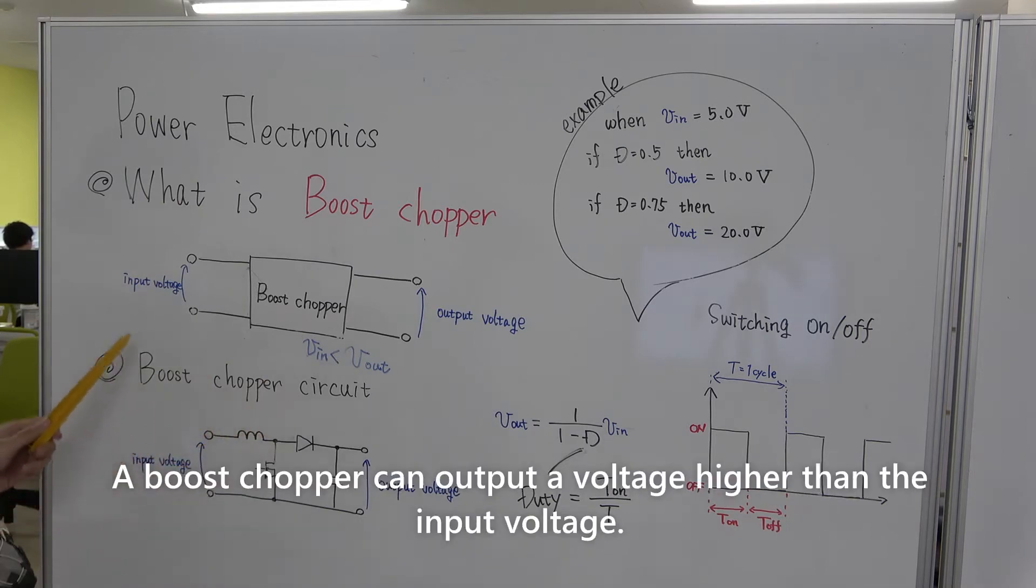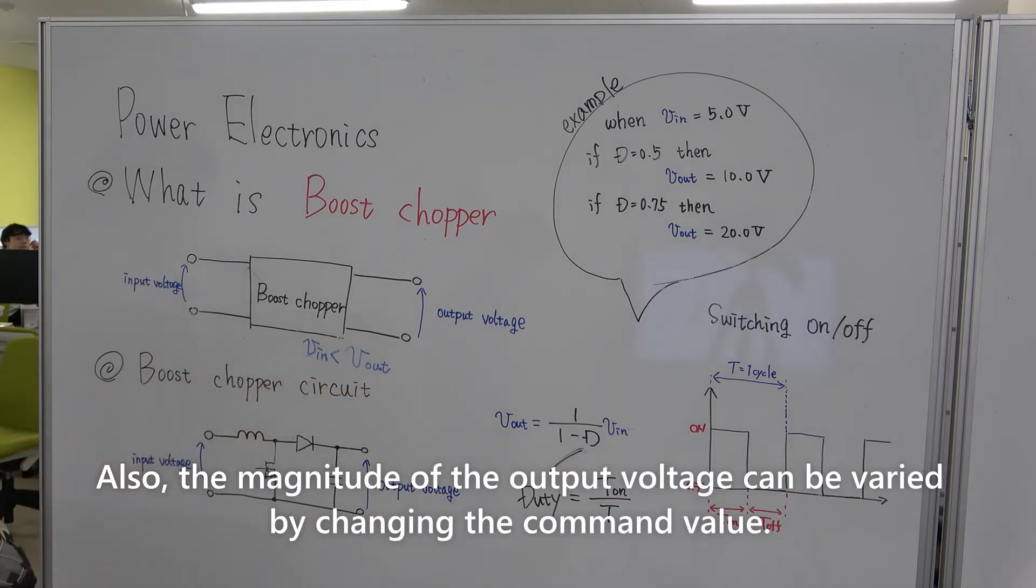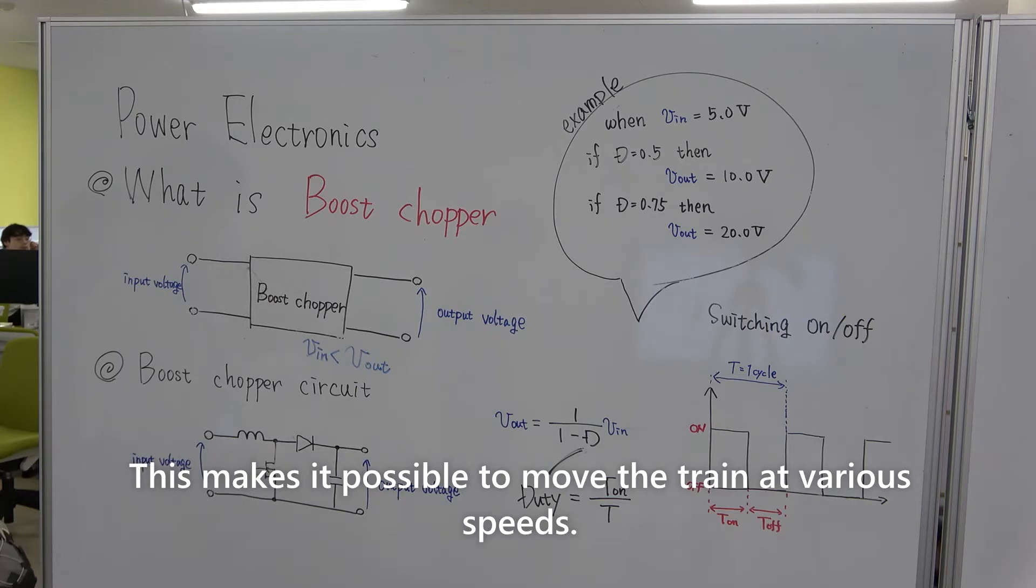A boost chopper can output a voltage higher than the input voltage. Also, the magnitude of the output voltage can be varied by changing the commanded value. This makes it possible to move the train at various speeds.